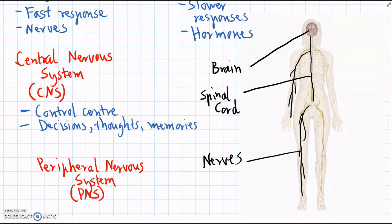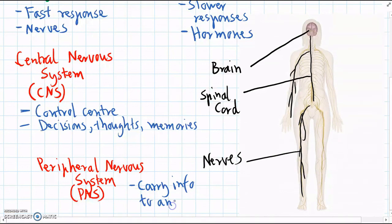And the job of the peripheral nervous system is to carry information to and from the central nervous system. So information from the tips of our fingers that we can sense will be carried back through the nerves, back to our spinal cord and our brain.